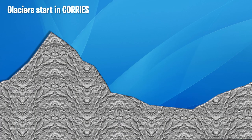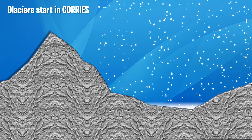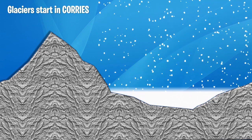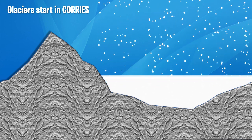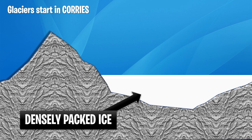Now let's start looking at glaciers from the very beginning. Glaciers start in what's known as a corrie — corries are the dips found in mountains. It will start to snow and as it begins to snow, it starts to collect in these corries. At first it's going to be light and fluffy, but once layer after layer starts to pack, it becomes much heavier and more dense, creating densely packed ice.